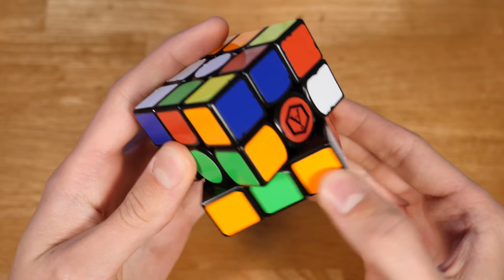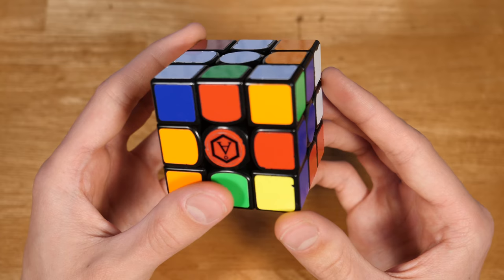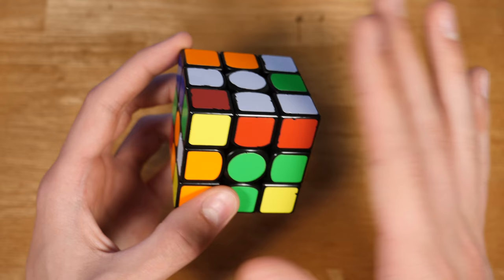And before he does the final D, he actually inserts this pair right here. So he just rotates and does the pair quickly. And then here, this is really interesting—instead of doing a D prime, which is something you might consider doing, he does a wide U prime, putting the solved pair in the back.